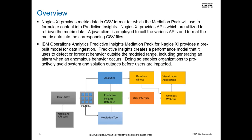The IBM Operations Analytics Predictive Insights Mediation Pack for Nagios XI provides a pre-built model for data ingestion. This model is then used to forecast behavior outside of the modeled range, which generates alarms. The Nagios XI Mediation Pack provides metric data in CSV format, which the Mediation Pack uses to formulate content into predictive insights. The Nagios XI provides APIs which are utilized to retrieve the metric data. A Java utility is employed to call the various APIs and format the metric data into the corresponding CSV files. The diagram at the bottom of the slide shows that the Java utility retrieves Nagios XI metrics and formats them into CSV files, which are then ingested by the Predictive Insights product.